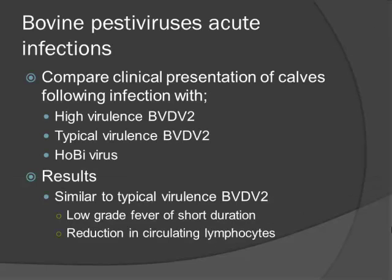Among the BVDs, we have high virulence BVD — the type 2s that cause hemorrhagic syndrome — and typical virulence BVD. I will never say 'low virulence BVD' because any BVD is virulent; it may not cause overt clinical disease, but get it into the fetus and you have reproductive disease through persistent infection. We simultaneously inoculated calves with high virulence BVD, typical virulence BVD, and Hobi-like virus. Results showed Hobi-like virus produced disease similar to typical virulence BVD2: low-grade fever of short duration and significant reduction in circulating lymphocytes.